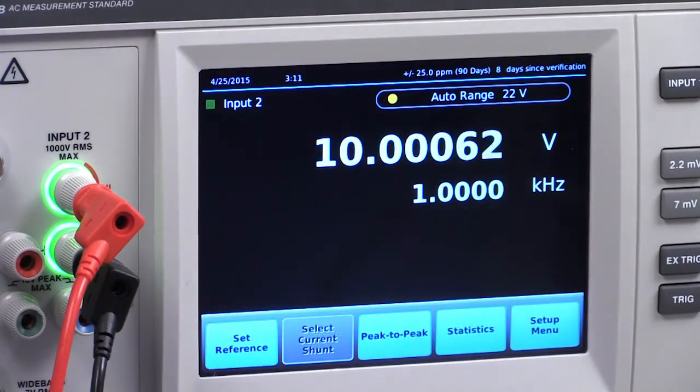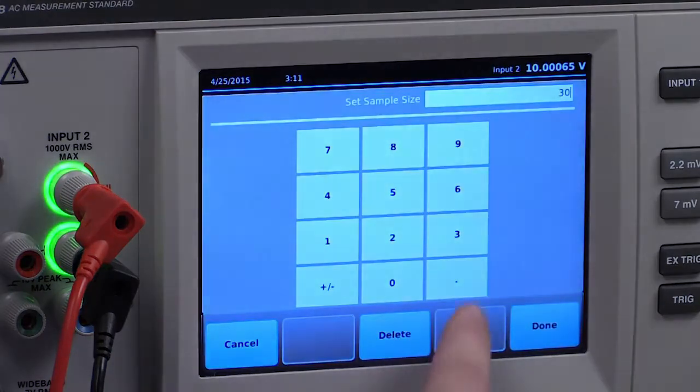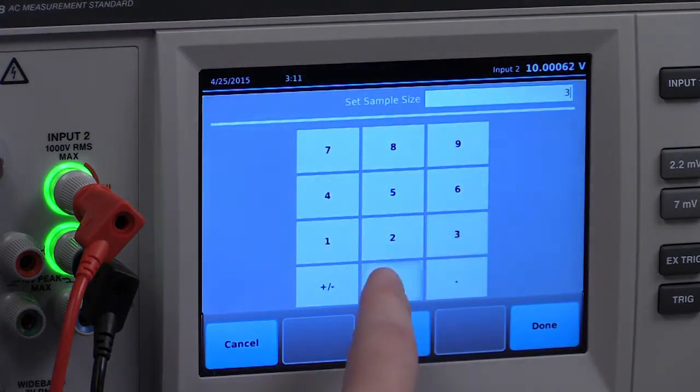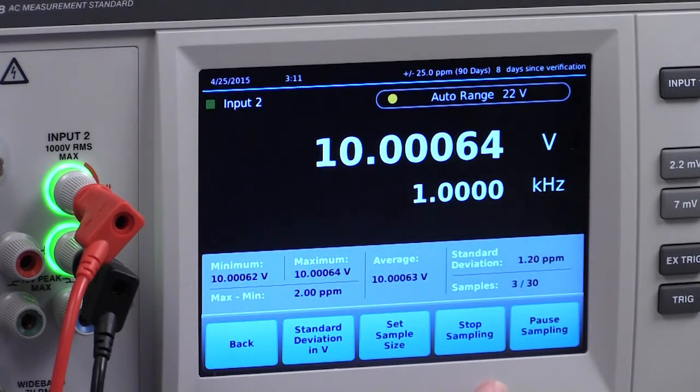The third major 5790B improvement is its new statistics function, enabling you to view and control the sampling while also viewing the measurements. Statistics allow you to easily gather measurement samples over a set period of time, providing min, max, average, standard deviation, and peak-to-peak data.